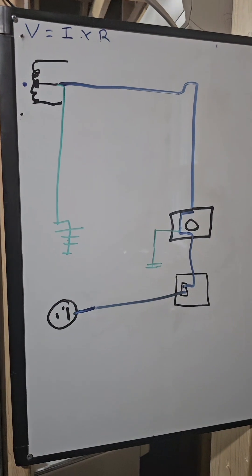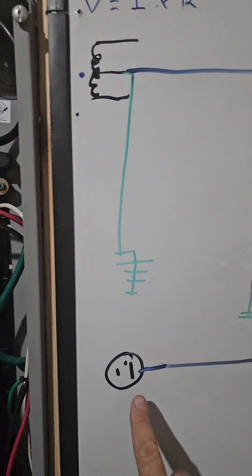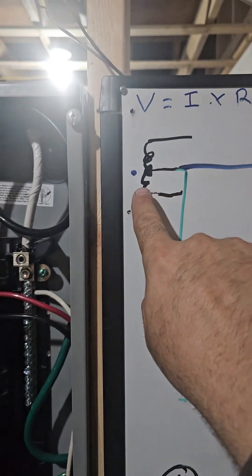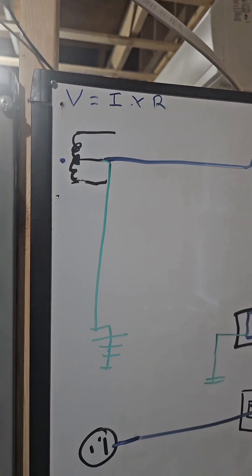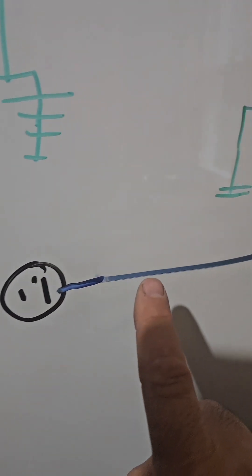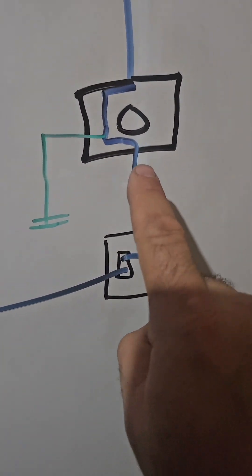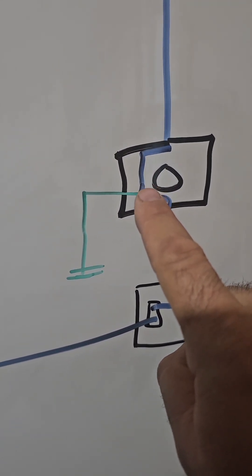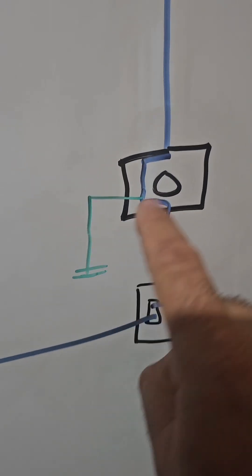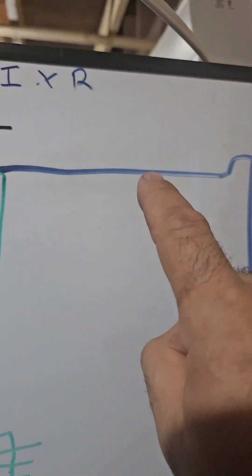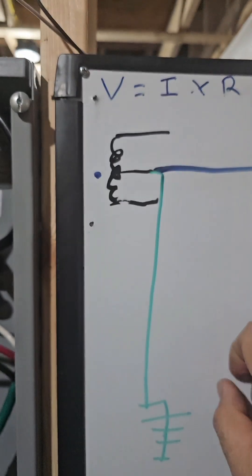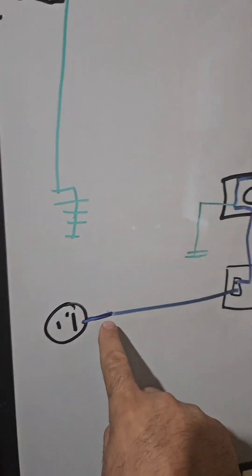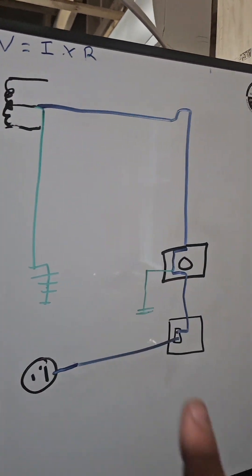Let's follow the path of that conductor. I've drawn it in blue because I can't draw white on a whiteboard. Here's the receptacle, this is your panel, this is your meter and first point of disconnect, and this is the transformer on top of your telephone pole. The white wire goes from the receptacle back to the panel, then up to your first point of disconnect where it is connected to ground rods — so it is grounded. Then it goes up through the riser of the service, across the triplex drop, to the midpoint of the transformer, where it is grounded again. So this wire is both the connection back to the midpoint and the grounded conductor.